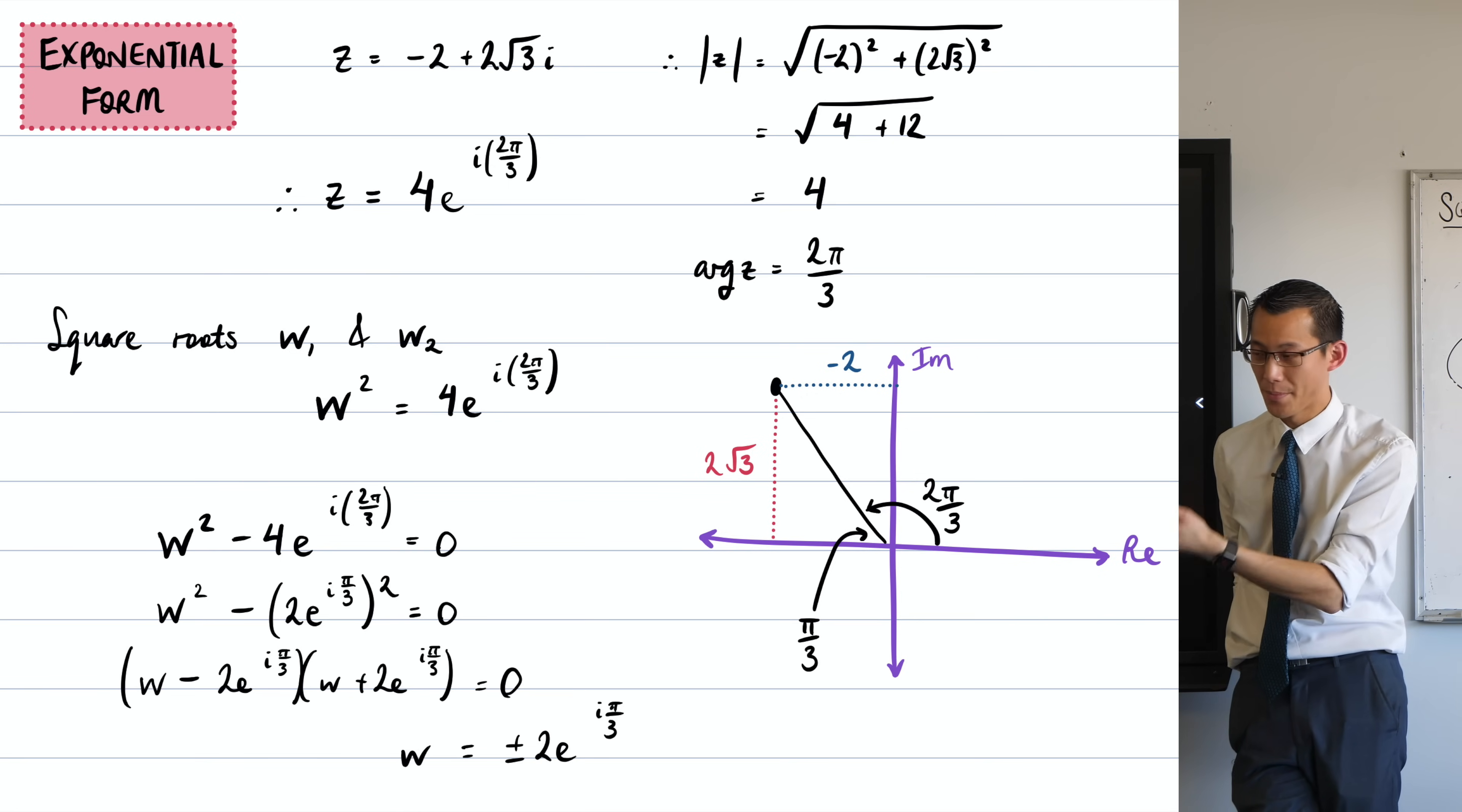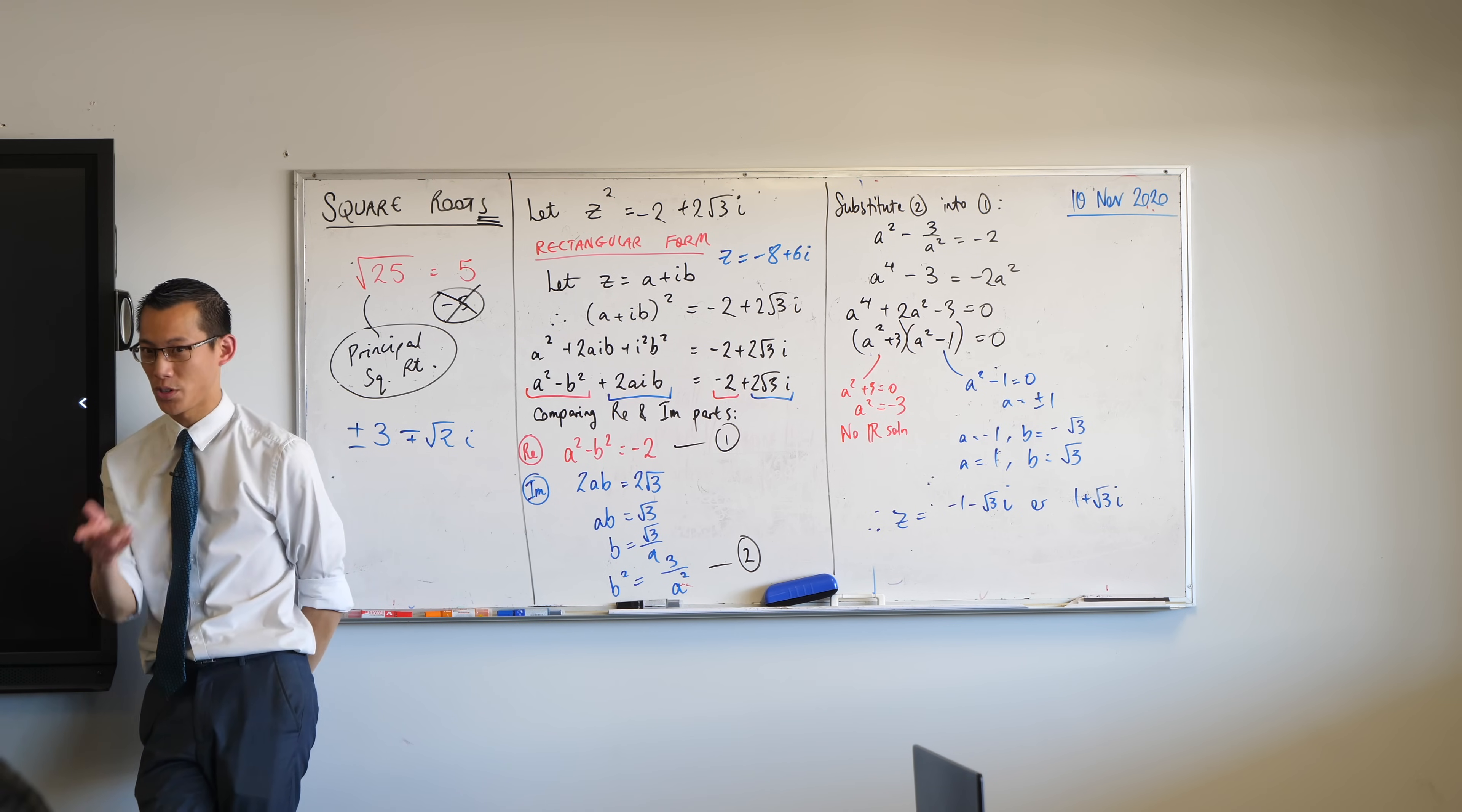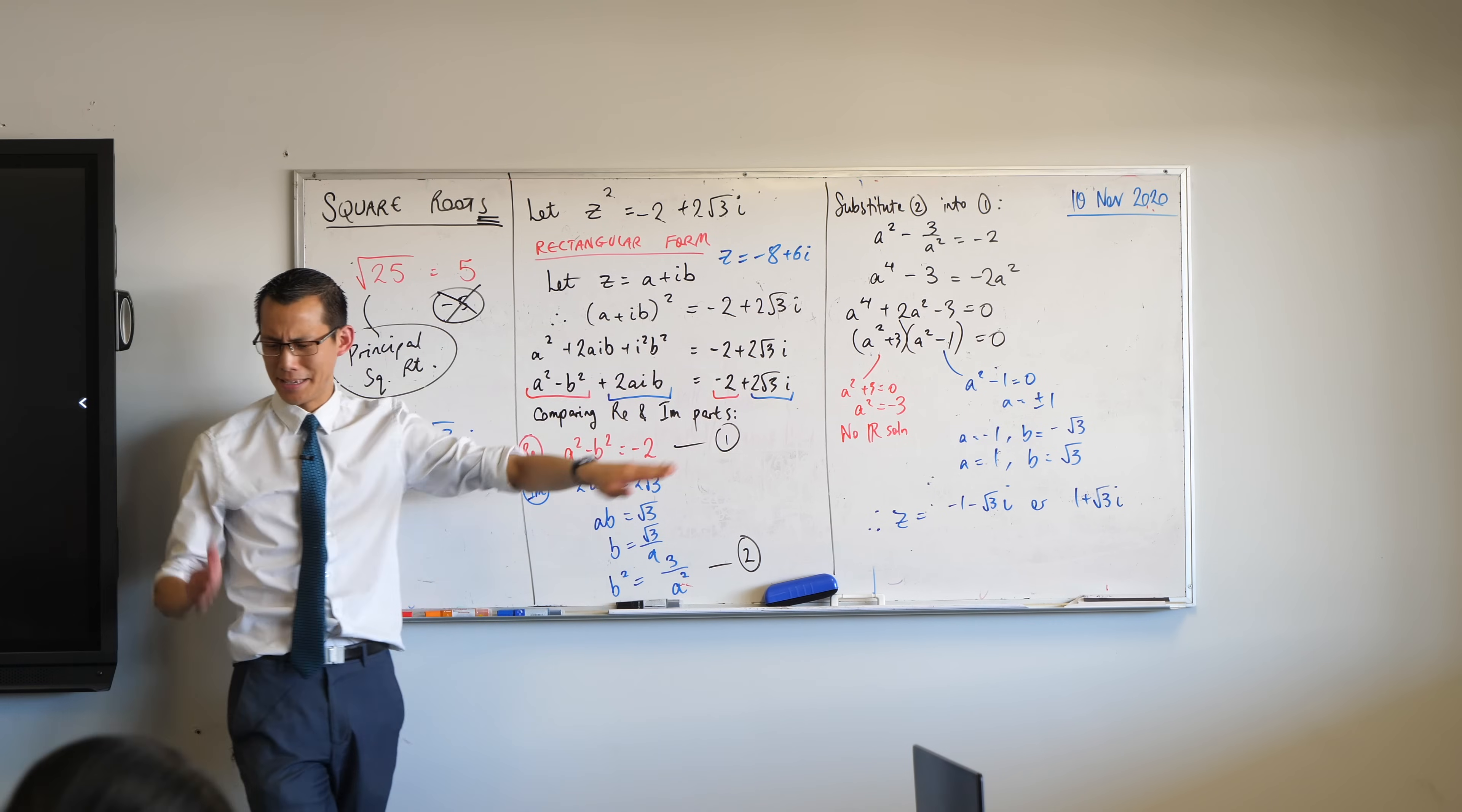but I do want to point out it works nicely because of the particular complex number I handed you. It's got a nice argument. If I gave you a number which the exercise frequently will, which has a weird, non-exact value, like what's the angle in my 6, 8, 10 triangle? I don't know.